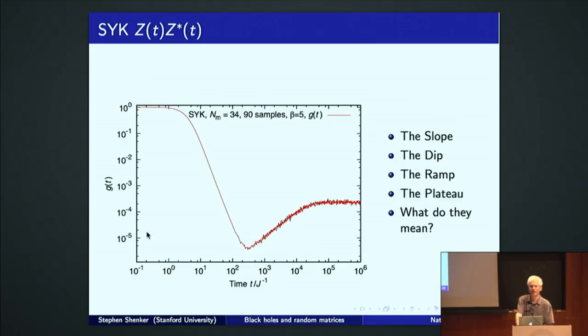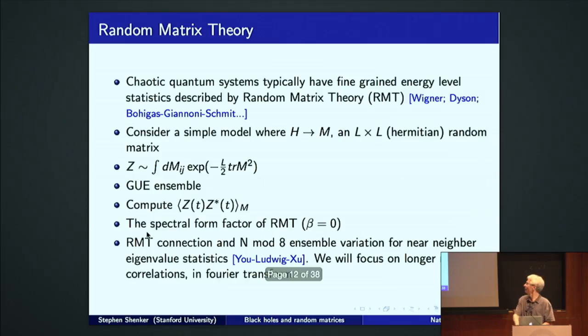Well, it's a mysterious, so the first thing you do is you try to make a model of your model. Okay. And we have chaotic systems, and there's a long history and set of intuitions that chaotic quantum systems typically have fine-grained energy level statistics described by random matrix theory. This is an idea that went, it's actually a Princeton idea. It goes back to Wigner, to Dyson, and more recently, there are concrete conjectures about semi-classical systems by these authors and many others.